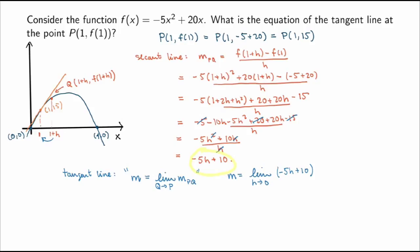We haven't seen how to evaluate limits formally yet, but this one is simple. The limit means I'm looking at h not equal to 0 but extremely close to 0. The second term is just 10 and doesn't depend on h. The first term, -5h, gets smaller and smaller as h approaches 0, approaching 0 itself. So the limit is simply 10 — the slope of the tangent line — and it's positive, just as we expected.